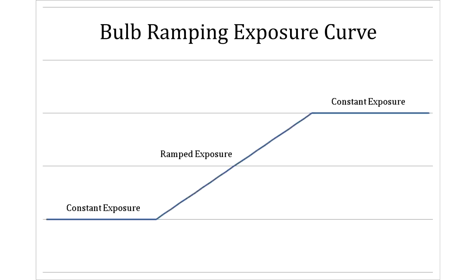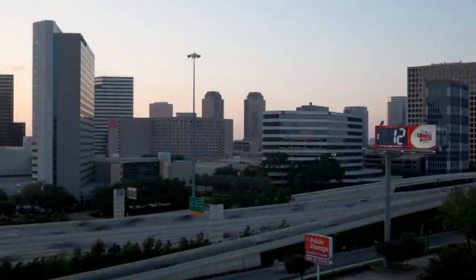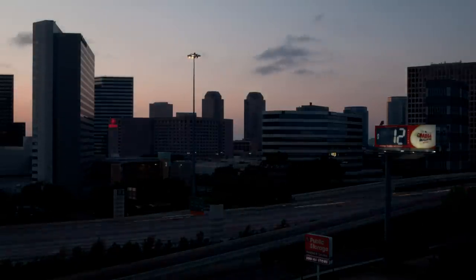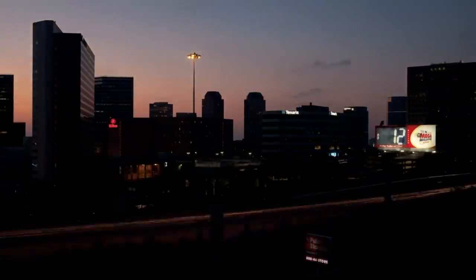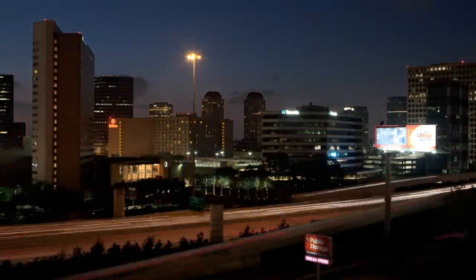In the previous video we described basic bulb ramping with the Promote Control, where you can program exposure changes. However, this is not enough to cover the whole range of exposures. Imagine you were shooting a sunset where you have to start with quite short exposures in daylight and gradually transition to almost complete darkness, showing how stars light up in the sky one by one — this requires a much wider range of exposures than basic bulb ramping mode allows.